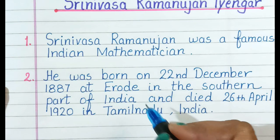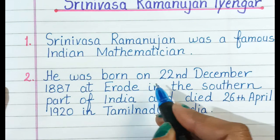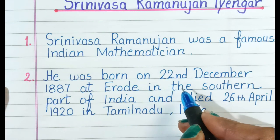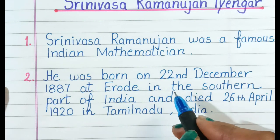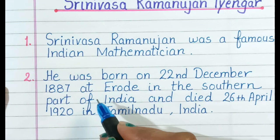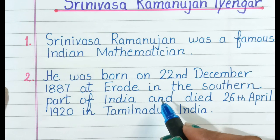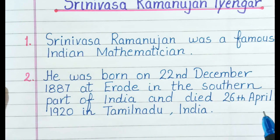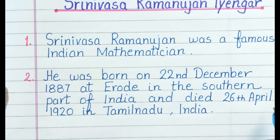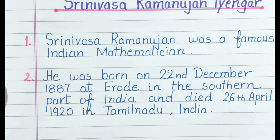Number 2. He was born on 22nd December 1887 at Erode in the southern part of India, and died on 26th April 1920 in Tamil Nadu, India.